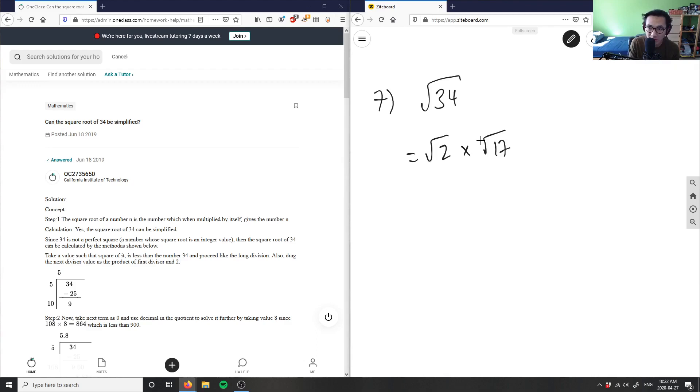Therefore, the most simplified form in terms of radicals is actually root 34 here. So when we say can the square root of 34 be simplified, technically no, because we leave it as root 34. We can't break it down into more radicals.